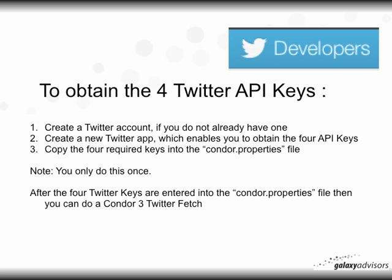Now let's talk about how to obtain the four Twitter API keys. The first step is to create a Twitter account if you do not already have one. The second step is to create a new Twitter app or application, which enables you to obtain the four API keys. The third step is to copy the four required keys into the ConorProperties file. You only have to do this once. After the four Twitter keys are entered into the ConorProperties file, you can do a Conor3 Twitter fetch.